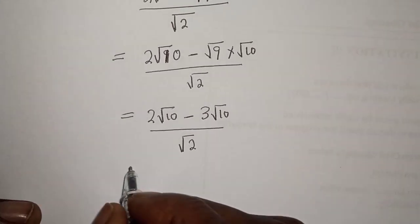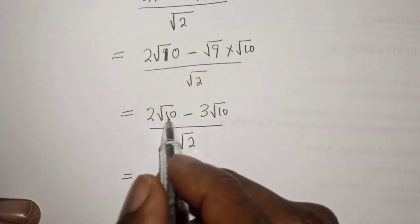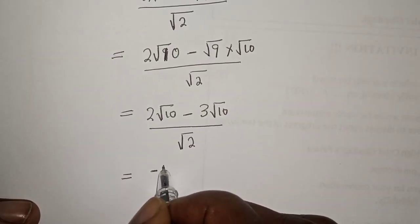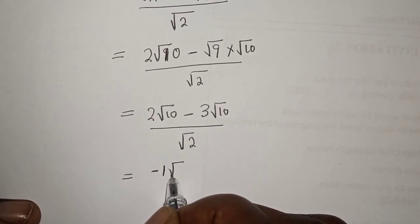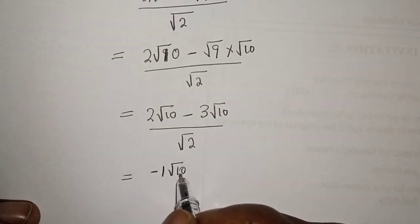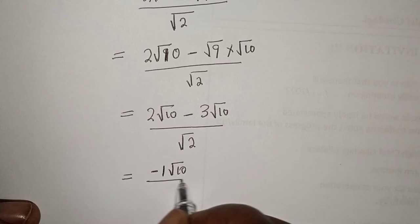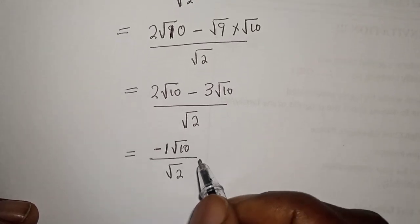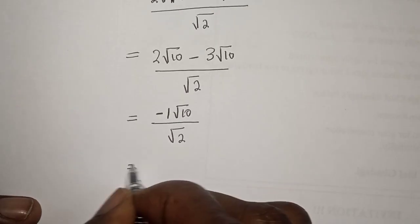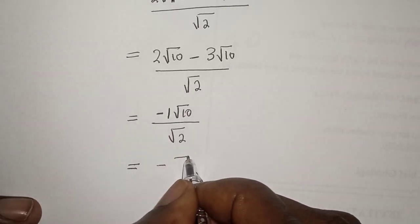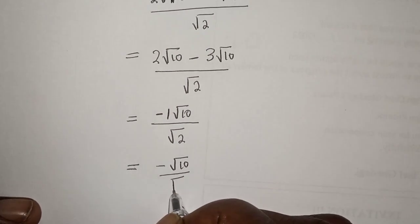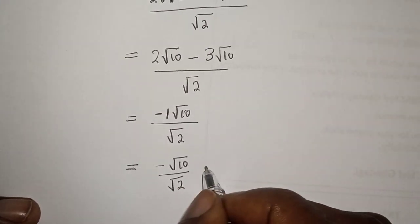Then here is 2√10 minus 3√10 over √2. We have to subtract. This is equal to 2√10 minus 3√10 equals minus 1√10, or minus √10 over √2.